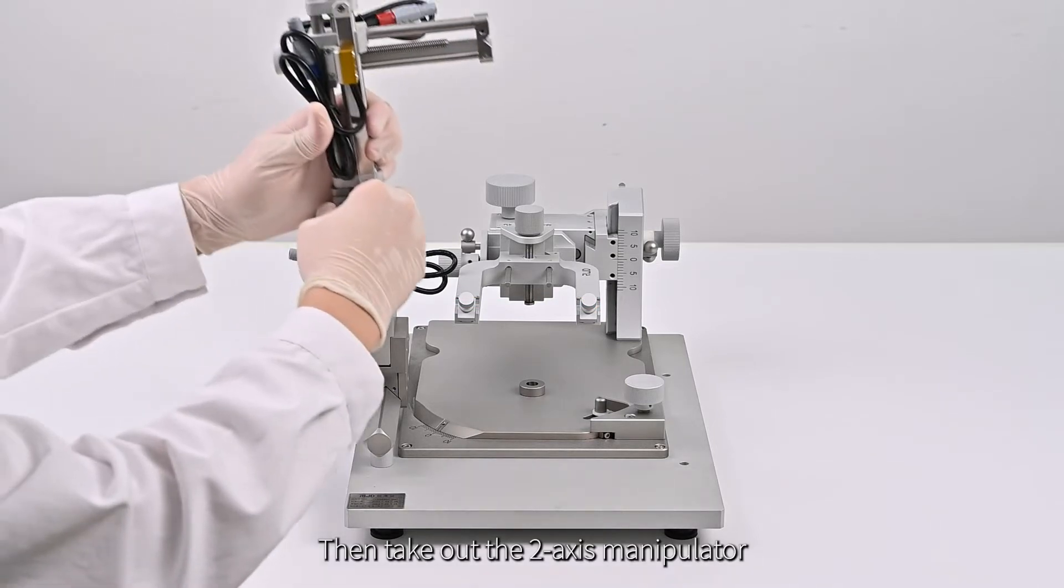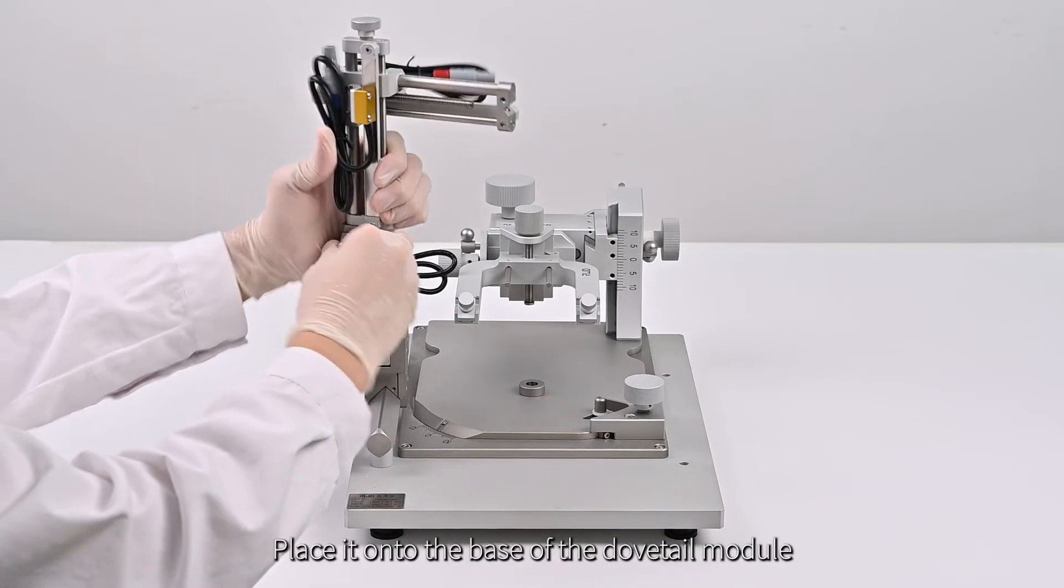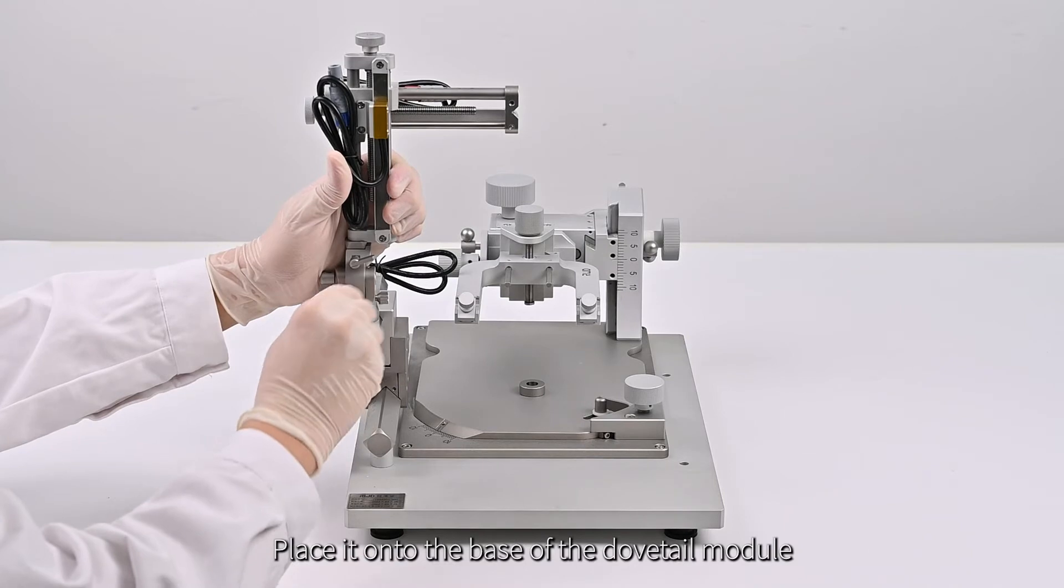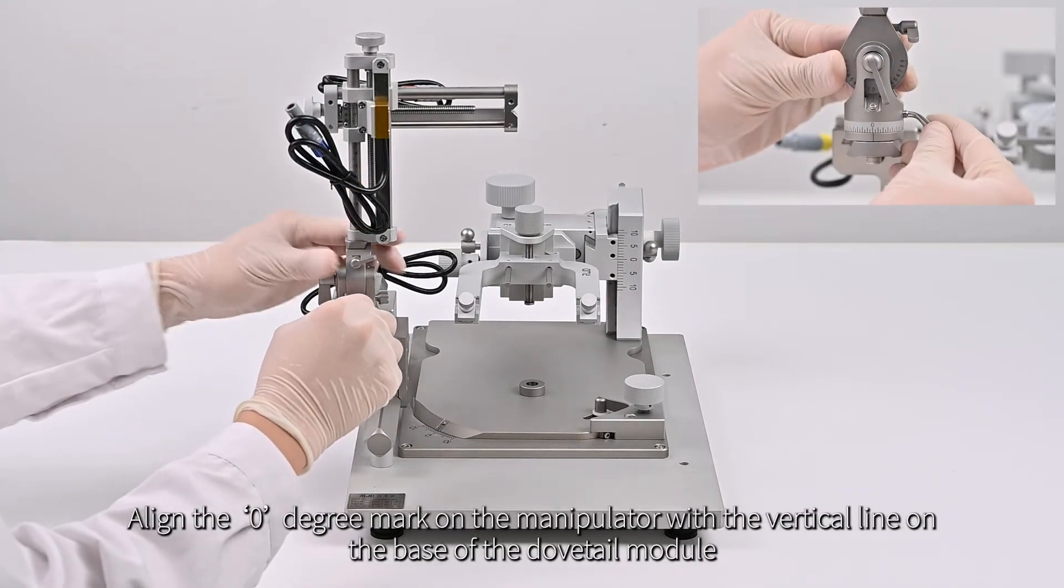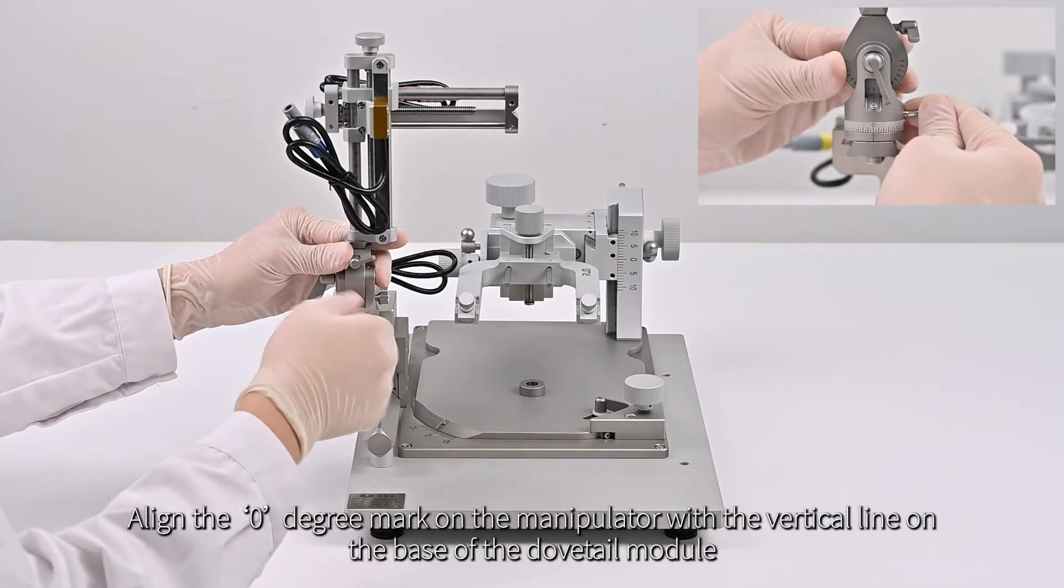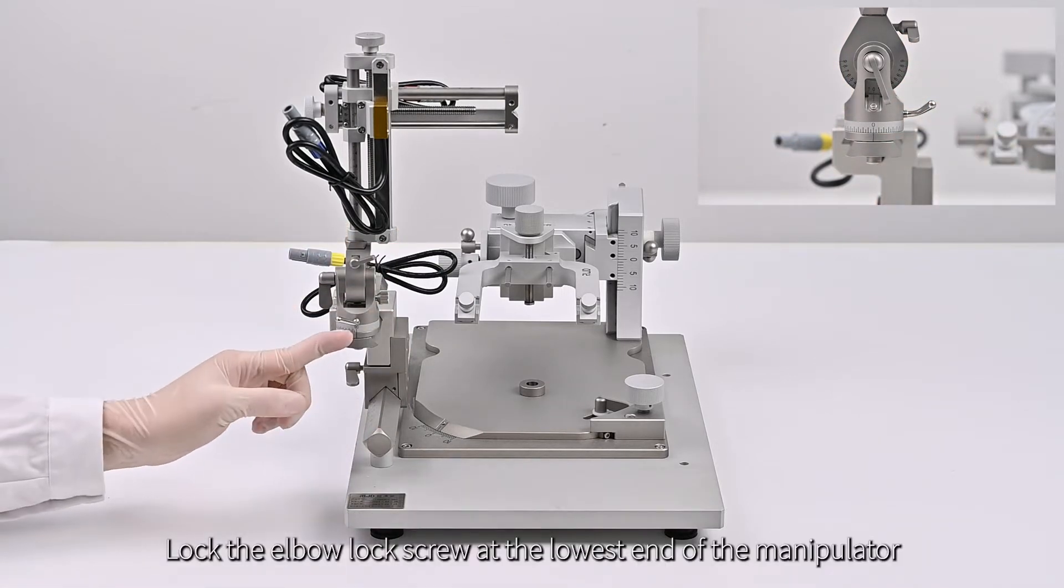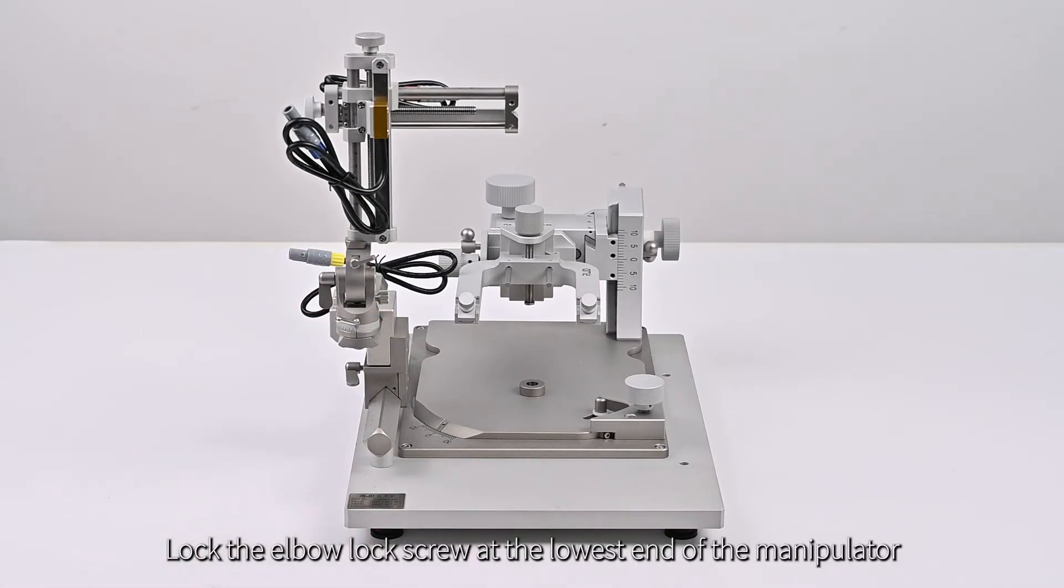Then take out the two-axis manipulator. Place it onto the base of the dovetail module. Align the zero-degree mark on the manipulator with the vertical line on the base of the dovetail module. Lock the elbow lock screw at the lowest end of the manipulator.